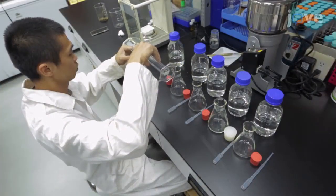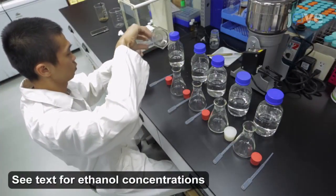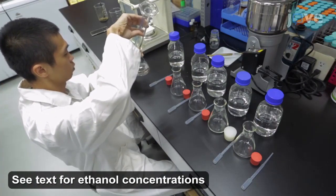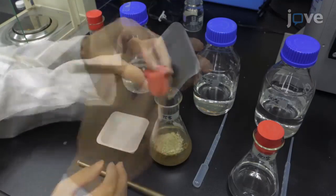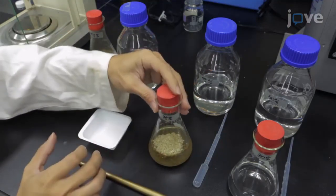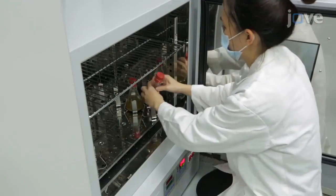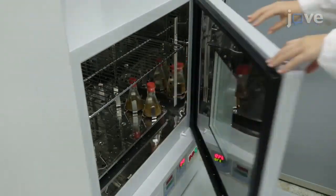Set out five flasks and add 100 milliliters of various concentrations of ethanol in water to each. Mix 10 grams of ground propolis into the ethanol solution in each flask and incubate at 25 degrees Celsius with shaking at 250 rpm for 48 hours.